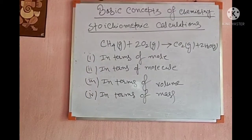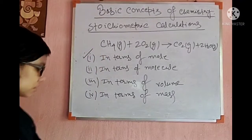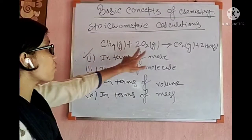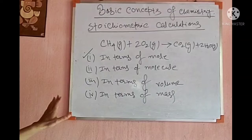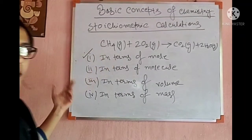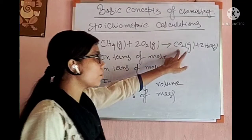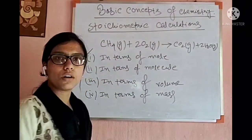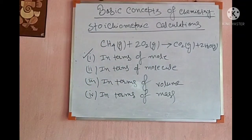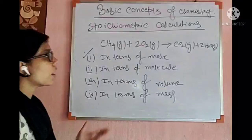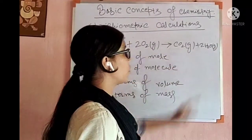The first type is in terms of moles. The stoichiometry of this chemical equation is 1 is to 2 — that means 1 mole of methane reacts with 2 moles of oxygen giving 1 mole of carbon dioxide and 2 moles of water. This is the first type.